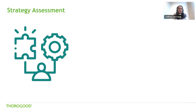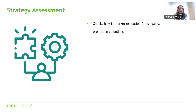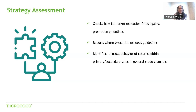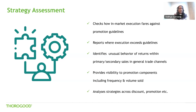The next one is strategy assessment. The main aim is to understand how discount strategies, promotion strategies, and the frequency of promotional events perform in the market. This helps check how in-market execution fares against promotion guidelines. Certain companies set promotion guidelines on a yearly basis, and we keep a tab on how performance is tracking. We can understand where execution exceeds guidelines and capture any outliers across trade channels. We can provide visibility to promotion components including frequency and volume sold, and the different strategies employed throughout the promotion cycle can be tracked and assessed.